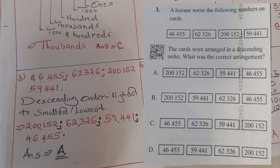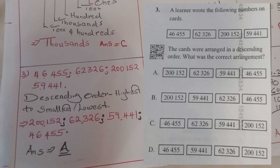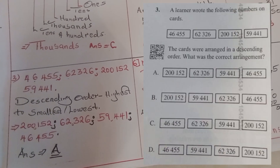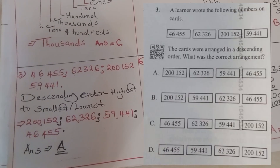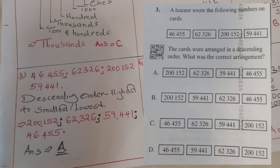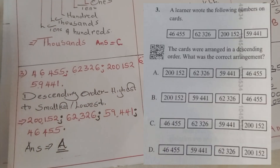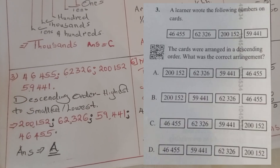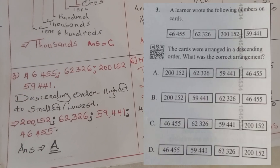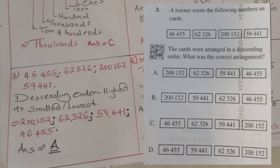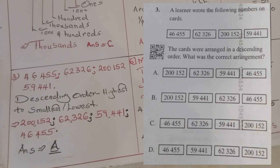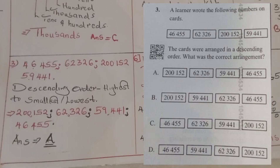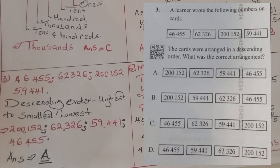Question three: Alana wrote the following numbers on cards — four numbers were written. The question is: the cards were arranged in descending order. What was the correct arrangement? Descending order means arranging numbers from the highest to the lowest. So the arrangement goes: two hundred thousand, sixty-two thousand, fifty-nine thousand, then forty-six thousand. The correct answer was A.